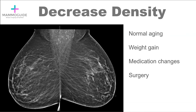A person's breast density is not a static thing — it changes over time. Many things can decrease the density. The most common is normal aging; as a woman ages, particularly after menopause, the breasts often get a little less dense. While not usually a dramatic change, it can push a patient into the not-dense category. Weight gain is also common — even just a few pounds can decrease breast density.